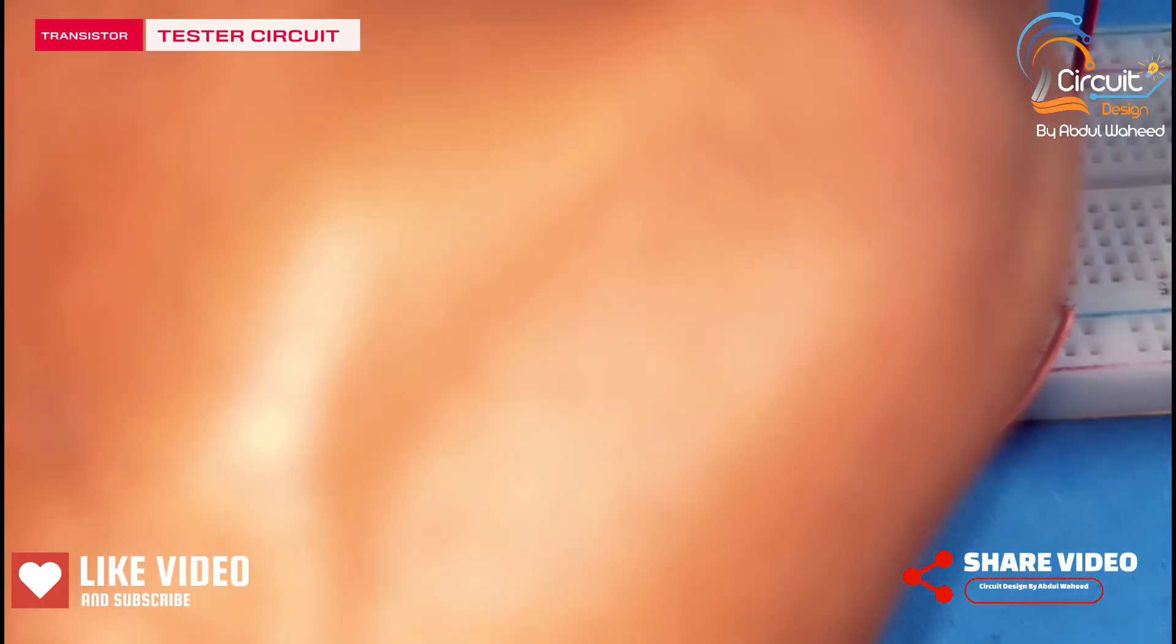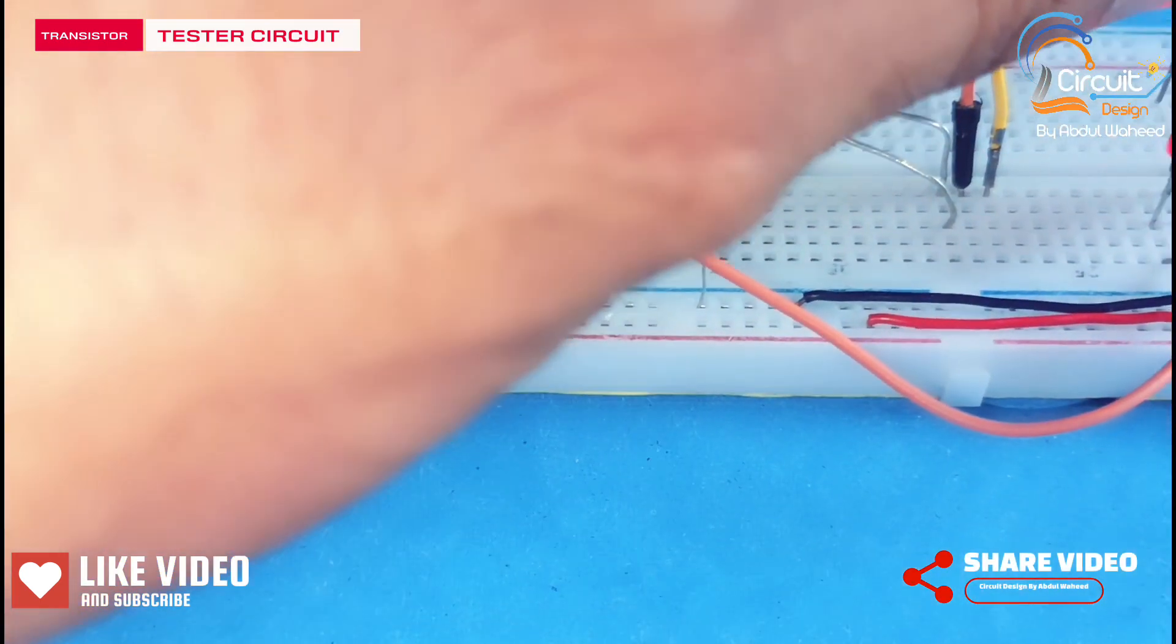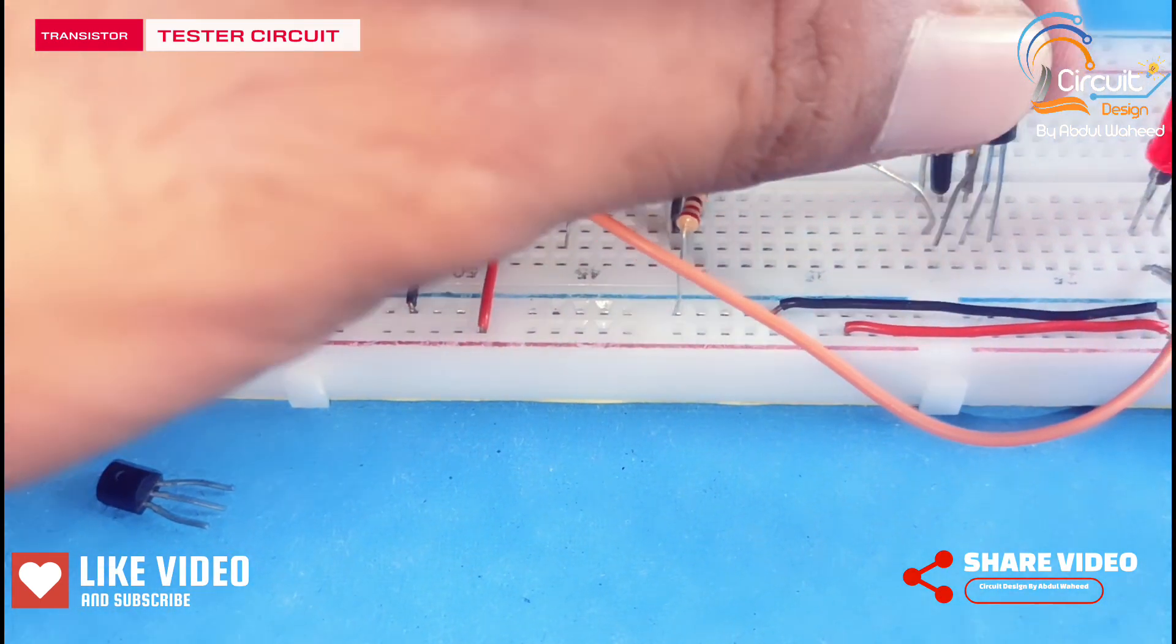Now I will place the PNP type transistor, then this LED will stop blinking.